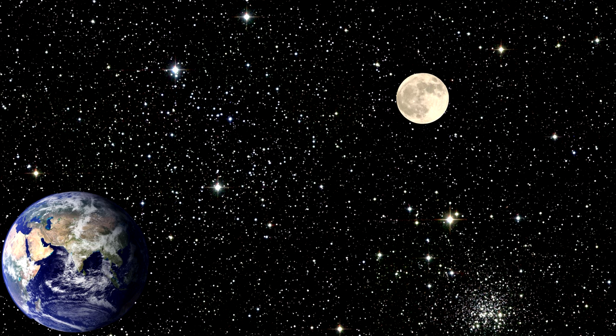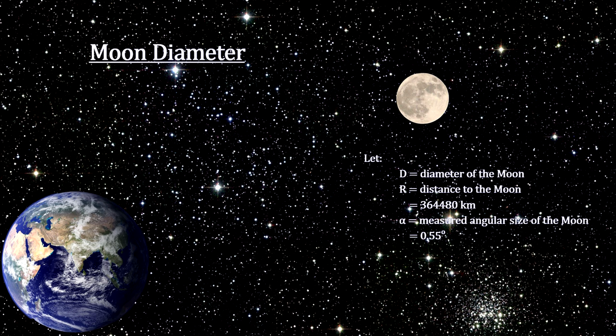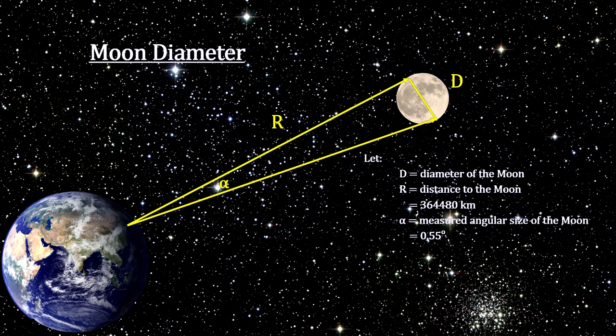It's important to note that once you know the distance, there are a number of other things we can learn about an object. For example, given the distance and the angular displacement of the object in the sky, we can calculate its size. Here we see the Moon's diameter is almost 3,500 kilometers — that's just over 2,000 miles.